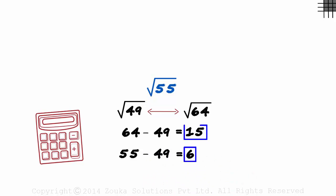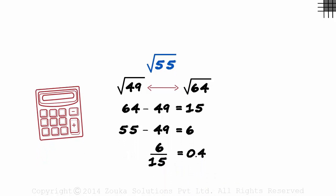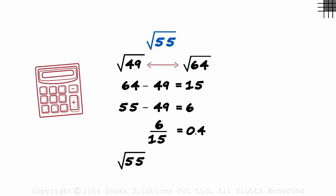Now 6 over 15 will tell us how far the answer is from 7. 6 over 15 is 2 over 5 which is 0.4. So root 55 will approximately equal 7.4.